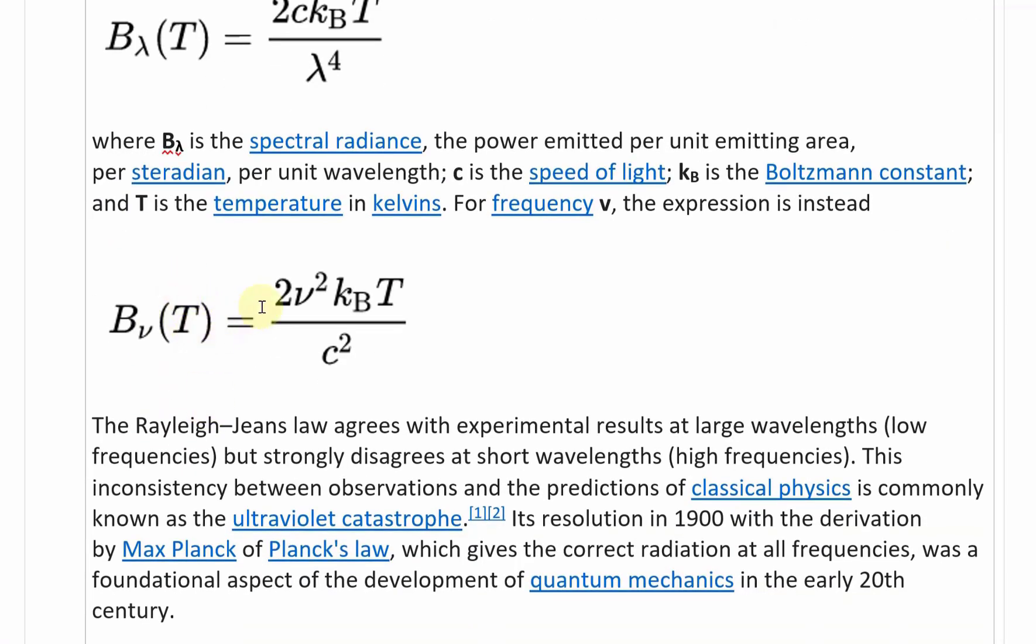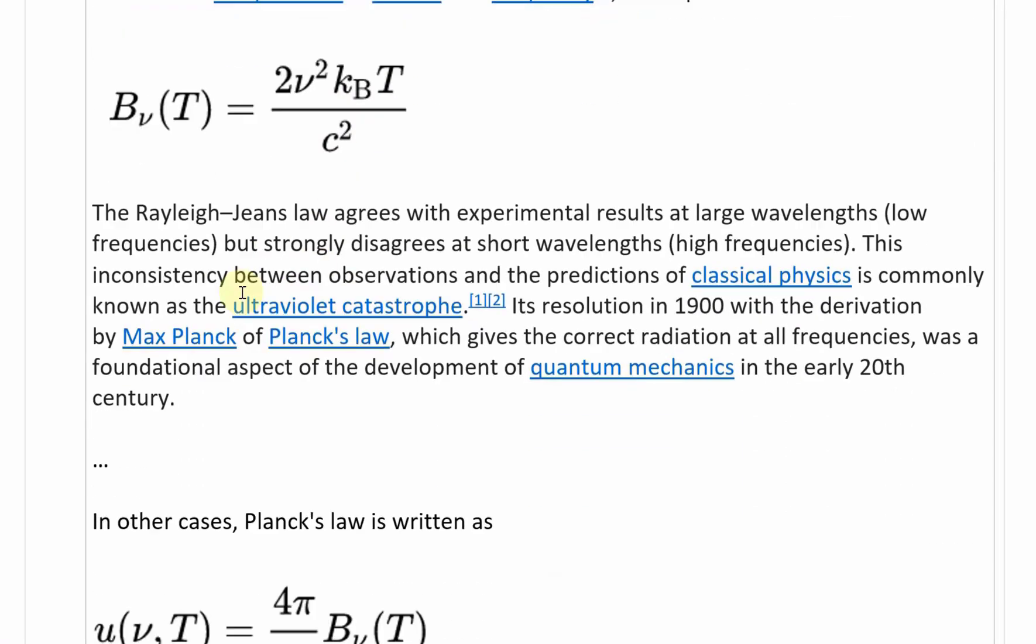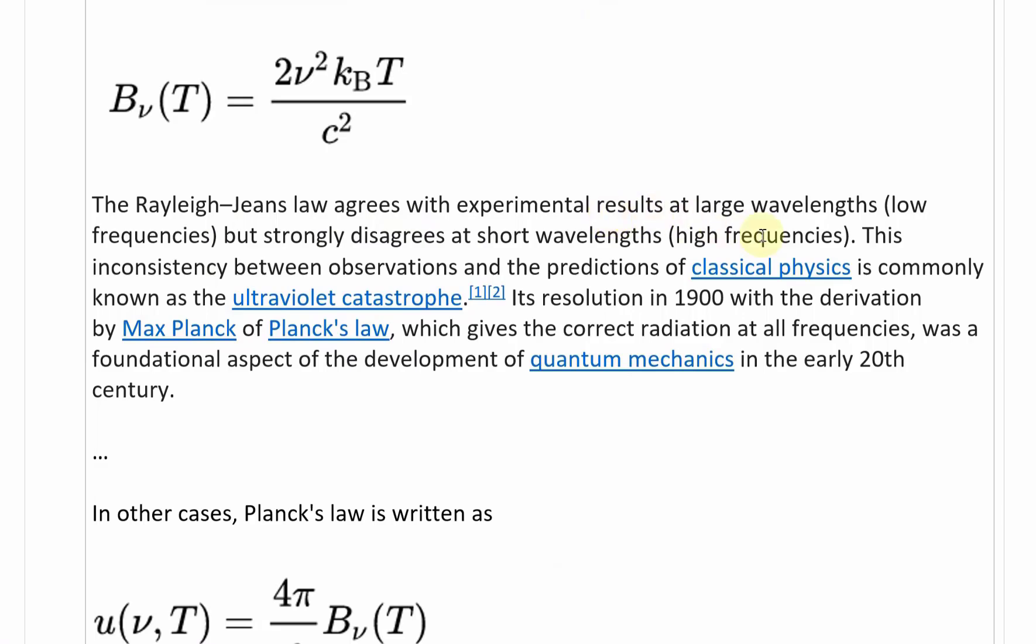Bν(T) equals 2ν²KbT divided by C². The Rayleigh-Jeans law agrees with experimental results at large wavelengths or low frequencies, but strongly disagrees at short wavelengths, high frequencies, as I showed several times. This inconsistency between observations and the predictions of classical physics is commonly known as the ultraviolet catastrophe. Its resolution in 1900, with the derivation by Max Planck of Planck's law, which gives the correct radiation at all frequencies, was a foundational aspect of the development of quantum mechanics in the early 20th century.